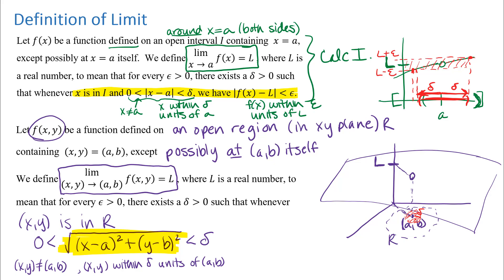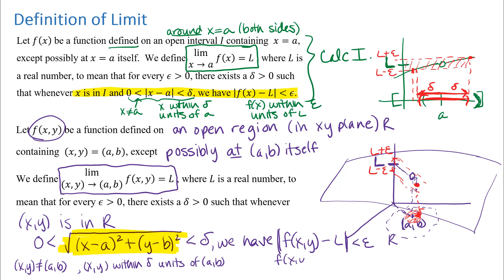That part looks different from what we did before, but it means the same thing: our input point is not at the point we're approaching, but it's within delta units of it. Then we want to be guaranteed that the outputs will be within epsilon units of L. Since we're measuring distance in the z-direction — straight up and down — we use the same form as before: the absolute value of f(x, y) minus L is less than epsilon. So the f(x, y) values are within epsilon units of L.